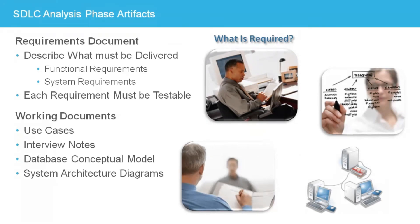System architecture diagrams show the different physical computers and devices that will work together to create the software system, as well as the software's interaction with external systems and data stores. These diagrams, which were created during the planning phase, are used to understand how data flows through the system. The functions performed by each server or device are broken down into components and subsystems to create a rough, high-level software architecture. As each requirement is discovered, it can be associated with one or more of these software components and subsystems, to help categorize and organize the requirements. These categories often become the sections of the final requirements document.